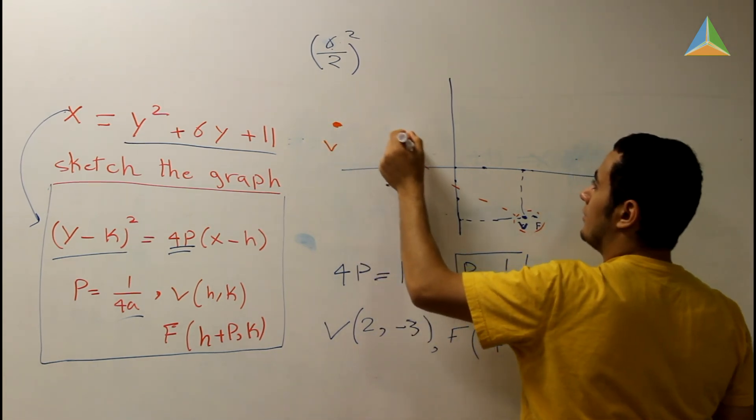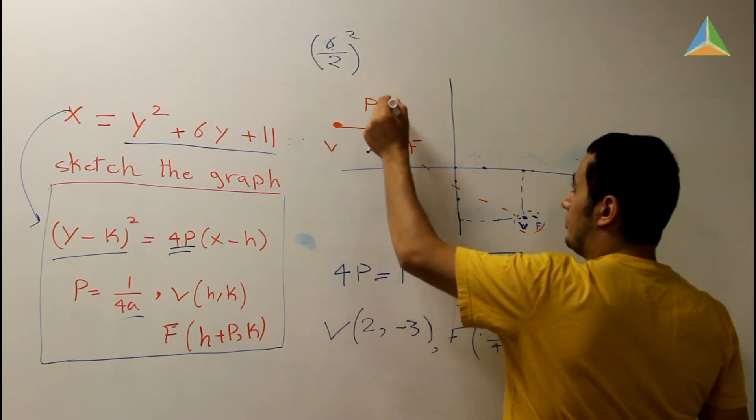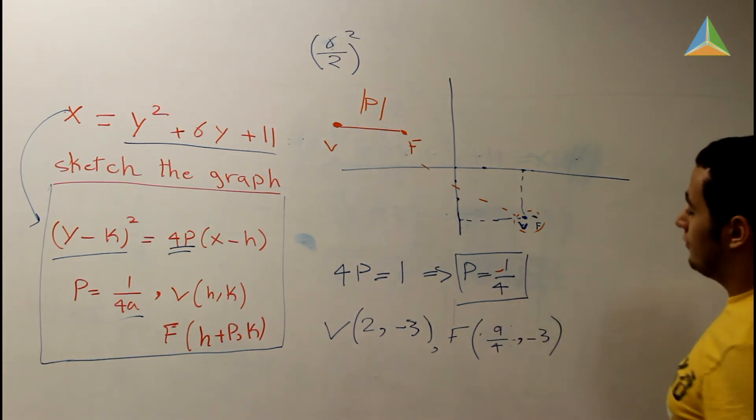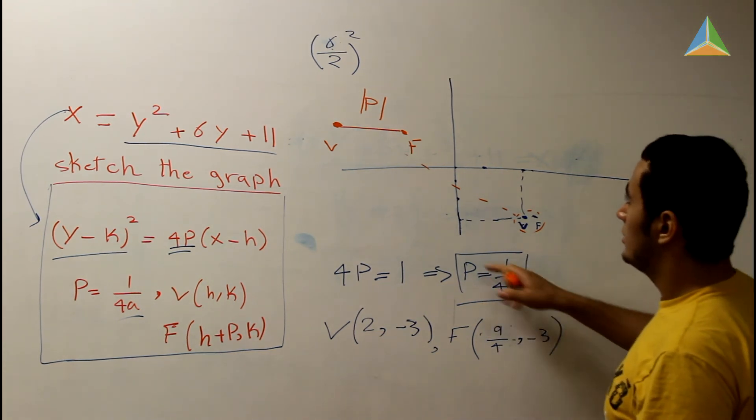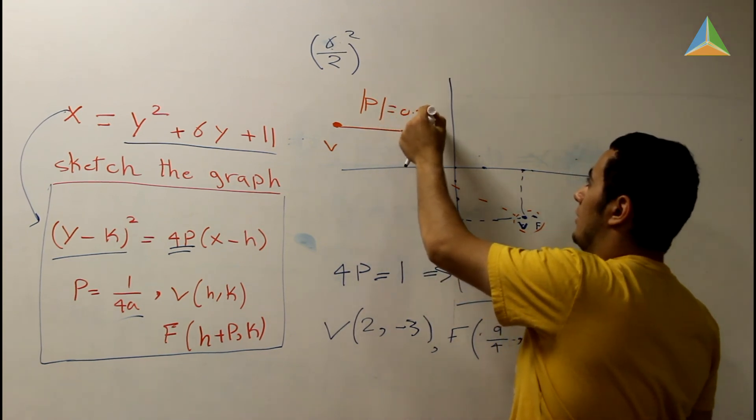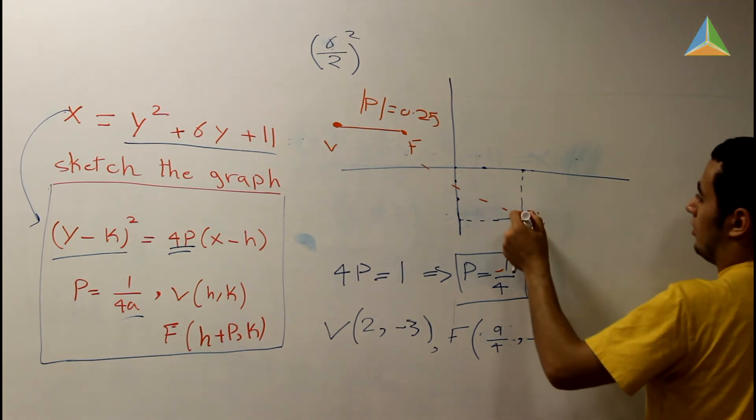Here is V, and here is F. So this distance is P. Not P, it's the absolute value of P. So if P were -1/4, but it's positive 1/4 in this equation. So the distance is going to equal 0.25.